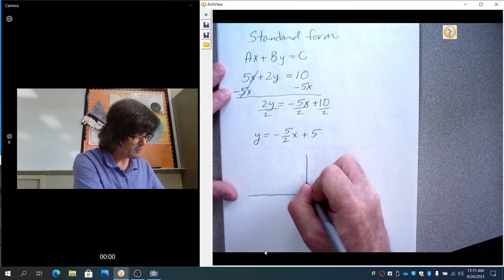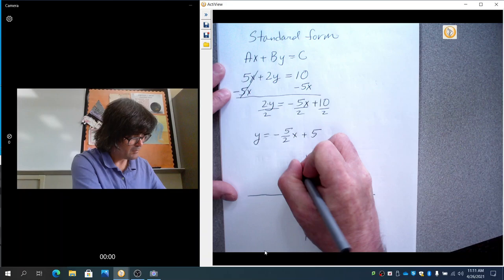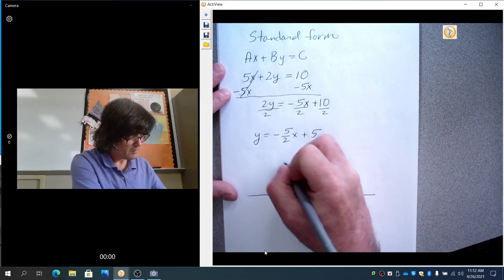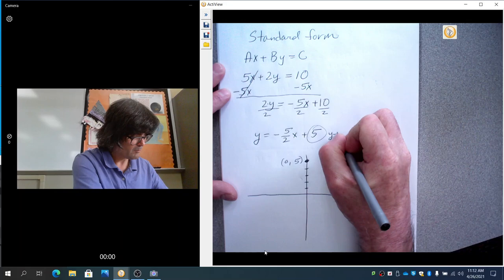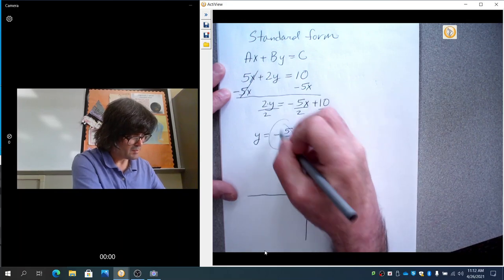Start at the y-intercept, which is 5, 2, 3, 4, 5. Call that 0, 5 right there. This is my y-intercept. And this is the slope.